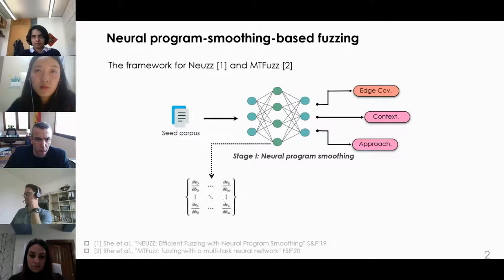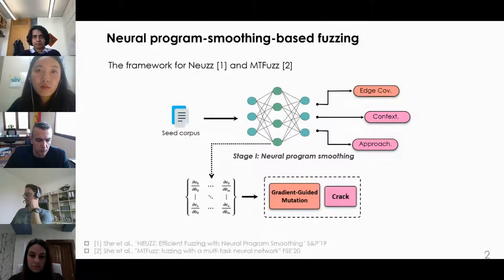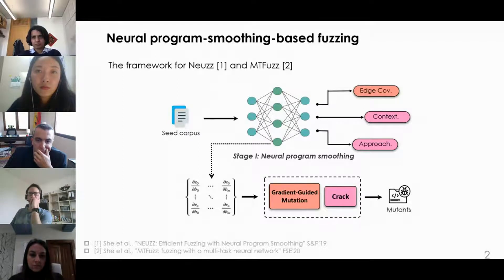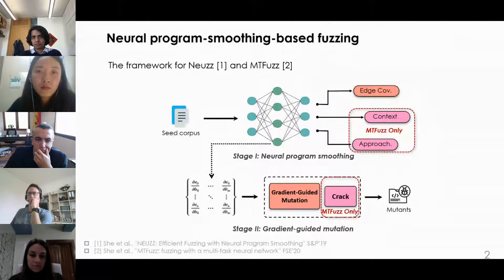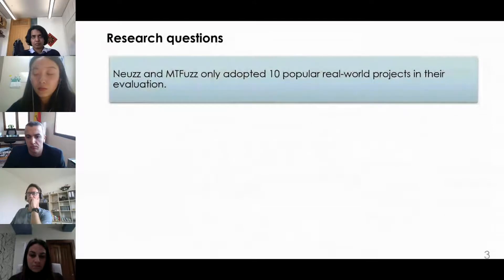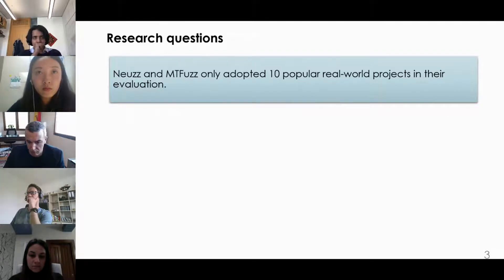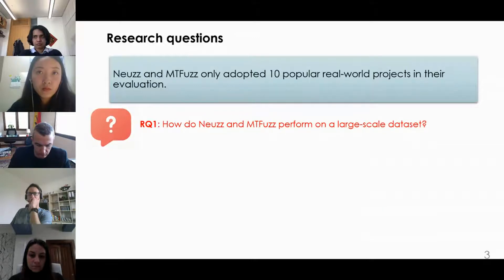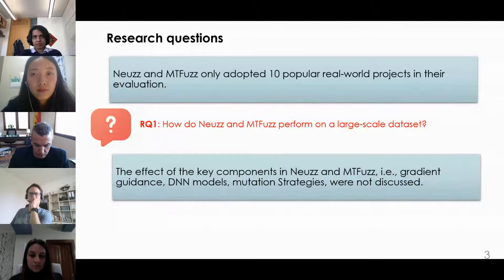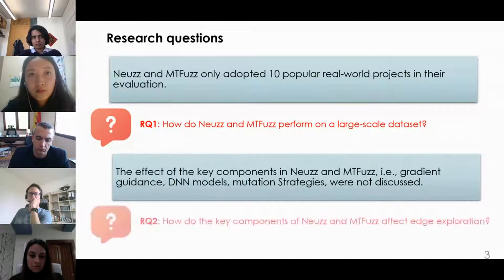After obtaining the neural network models, NeWS and Antifaz randomly select a deterministic number of seeds and explore edges. For each selected seed, they calculate the gradients of the selected edge vector with respect to all bytes. NeWS and Antifaz mutate the most promising bytes to generate mutants by sorting the gradient. Since NeWS and Antifaz only adopted 10 popular real-world projects in their evaluation, our first research question is: how do NeWS and Antifaz perform on a large-scale dataset? Our second research question is: how do the key components of NeWS and Antifaz affect edge exploration?